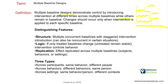Multiple concurrent baselines with staggered intervention introduction — you can also run them non-concurrently in certain situations. If only treated baselines change while untreated ones remain stable, intervention likely controls behavior. Replication: we're replicating the effect across multiple baselines. They can be subjects, behaviors, or settings. Across participants — same behavior, different people. Across behaviors — different behaviors, same person. Across settings — same behavior and person, different context.